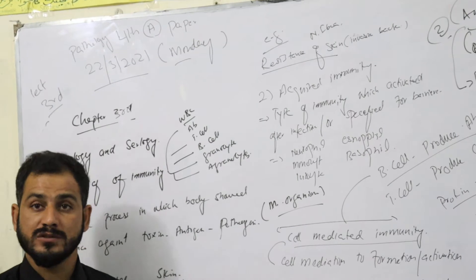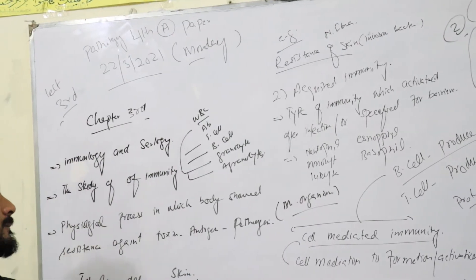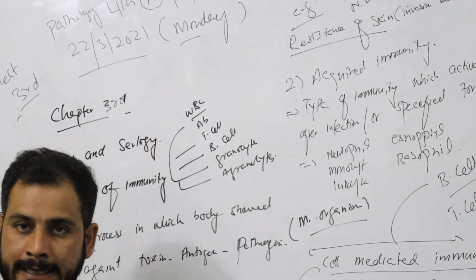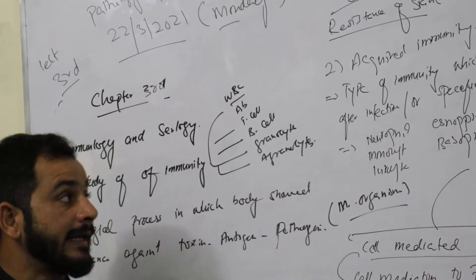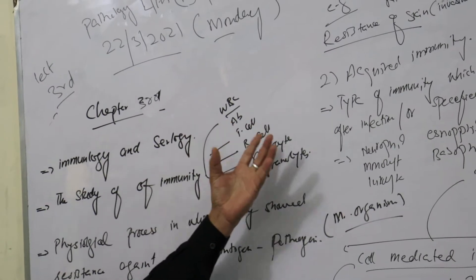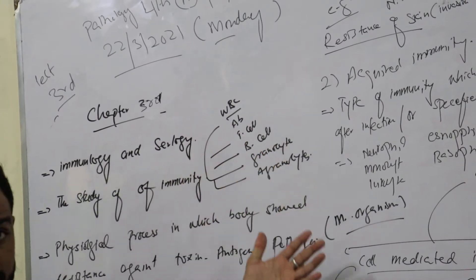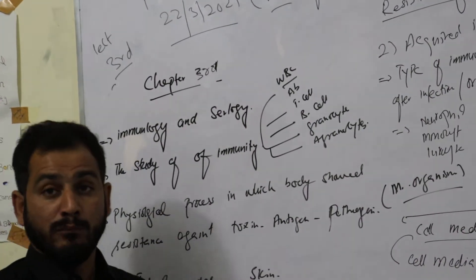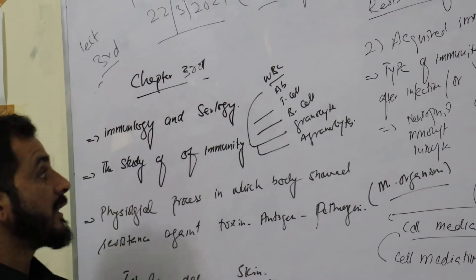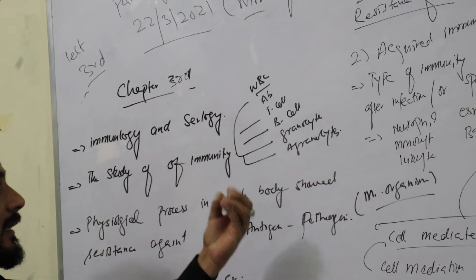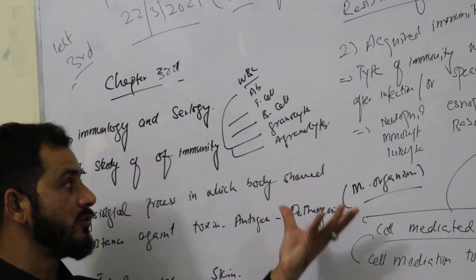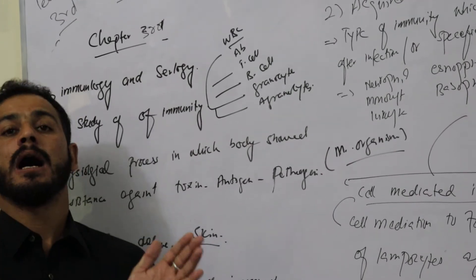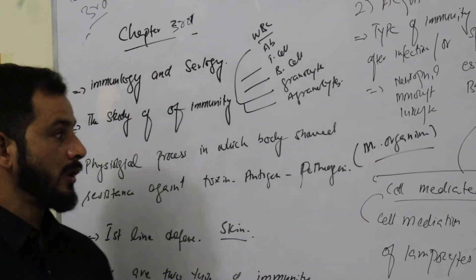What is meant by the immune system or immunology? Immunity involves the study of different cells — specifically the role of WBC. These include WBC, T cells, B cells, granulocytes, and agranulocytes. All of this study is called immunity, or immunology.